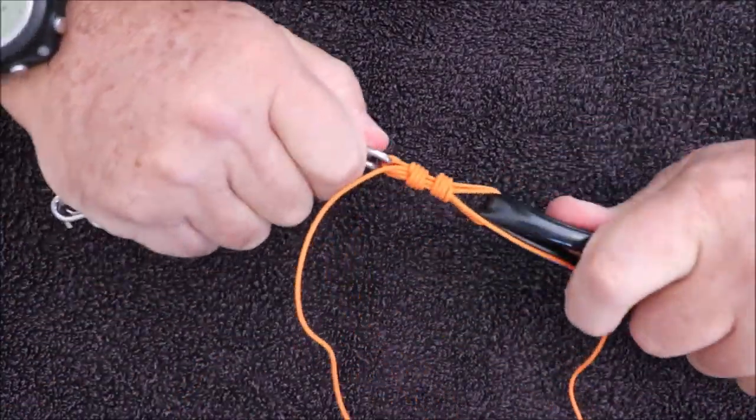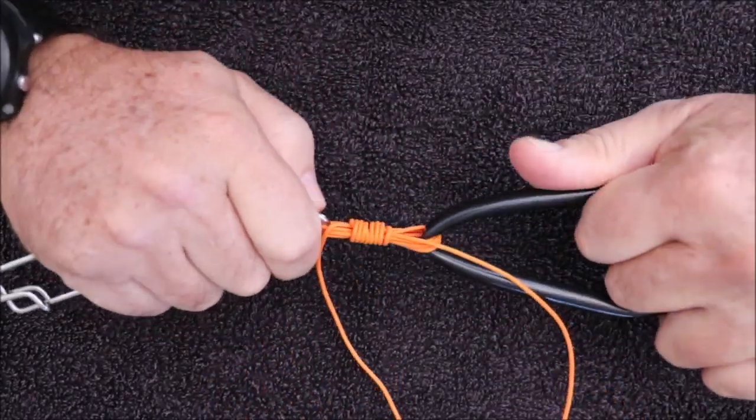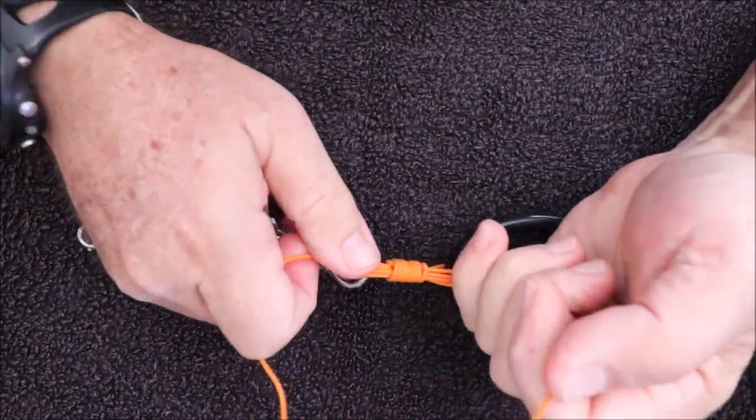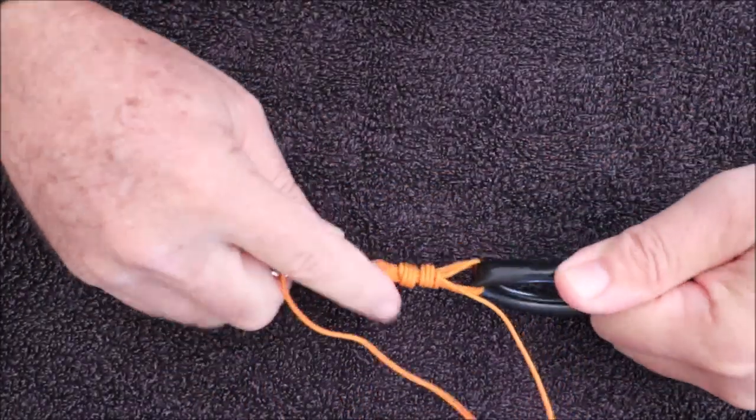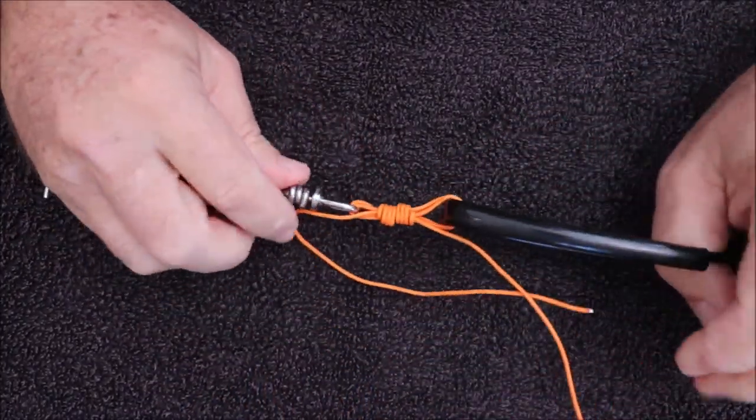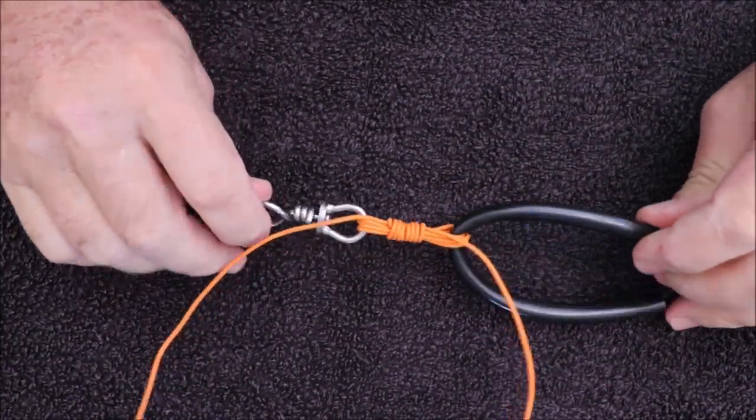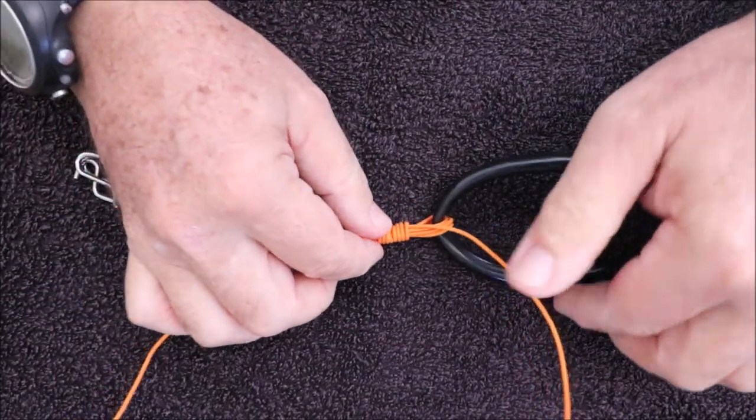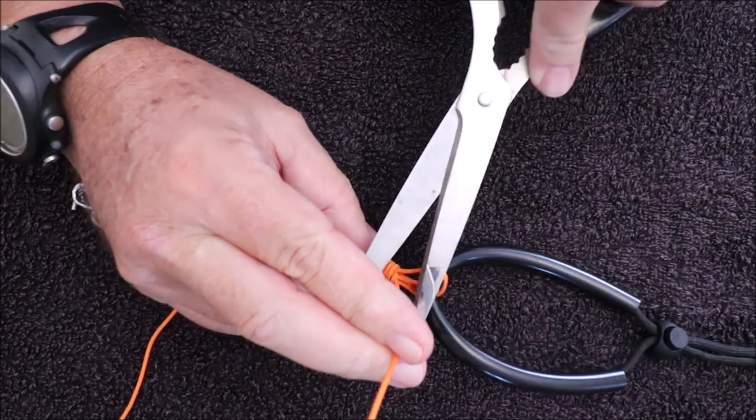As you can see, when it's finished, both tag ends exit facing away from each other. Now tension them up. Pull tight, slide them back towards each other. Keep tensioning, keep hauling. This knot will self-tighten and lock against itself.